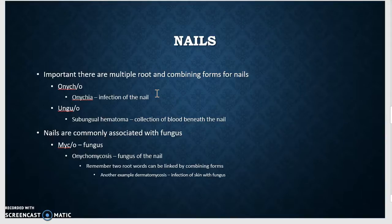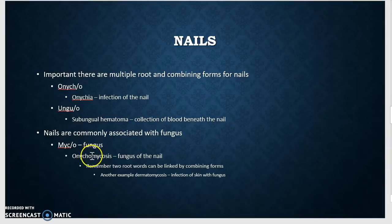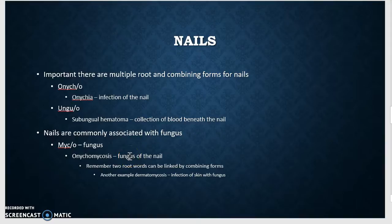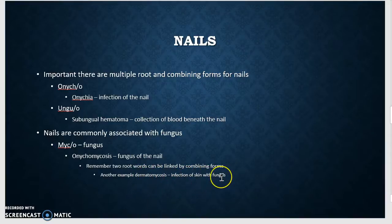Nails are commonly associated with fungus. The root word myco means fungus. Onychomycosis — onyco is nail, myco is fungus — so this is fungus of the nail. Multiple root words can be in the same word, linked by combining forms; here the O is the combining form. Another example: dermatomycosis — this is skin fungus, with dermato meaning skin and myco meaning fungus.